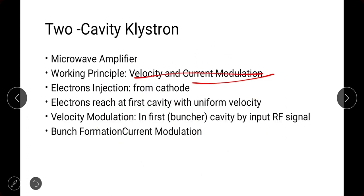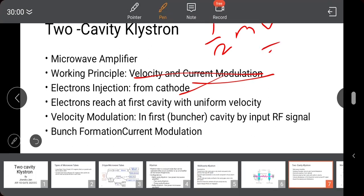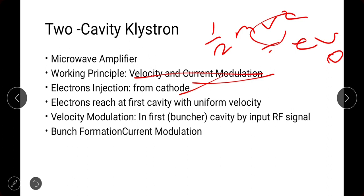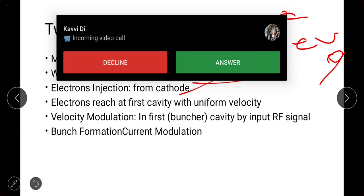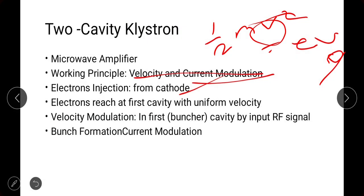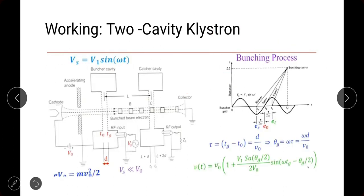Electrons are injected from the cathode and reach the first cavity with uniform velocity. Since the DC beam voltage is constant, the velocity will also be constant. The velocity is calculated from the relation: (1/2)mv² = eV₀, where V₀ is the DC beam voltage. Velocity modulation occurs in the buncher cavity by the input RF signal, forming bunches, and current modulation occurs in the catcher cavity.